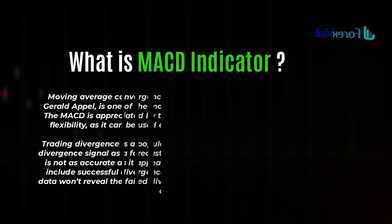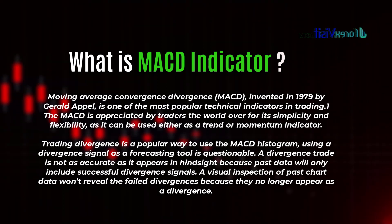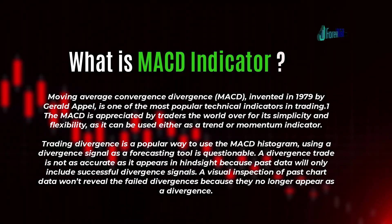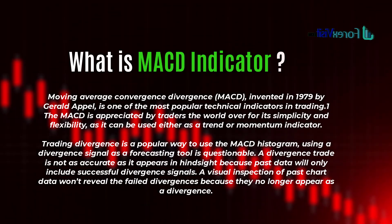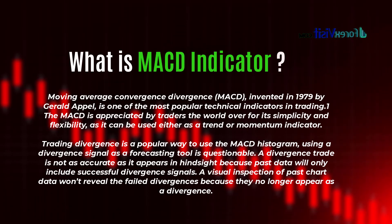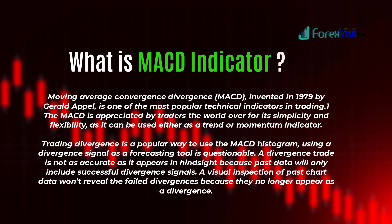Moving Average Convergence Divergence (MACD), invented in 1979 by Gerald Appel, is one of the most popular technical indicators in trading. The MACD is appreciated by traders worldwide for its simplicity and flexibility, as it can be used either as a trend or momentum indicator. Trading divergence is a popular way to use the MACD histogram, though using the divergence signal as a forecasting tool is questionable, as a divergence trade is not as accurate as it appears in hindsight.